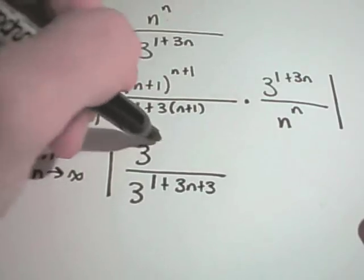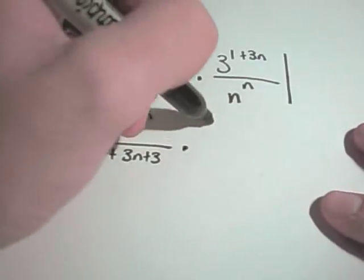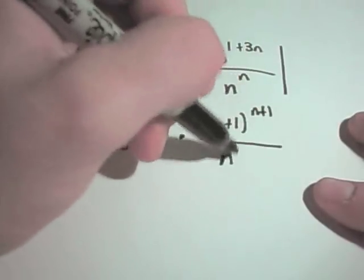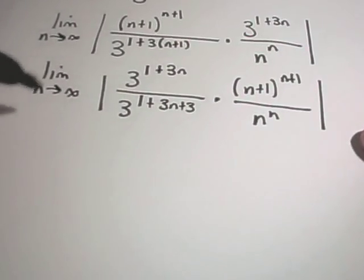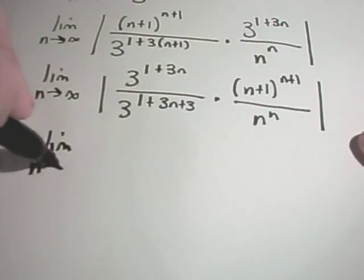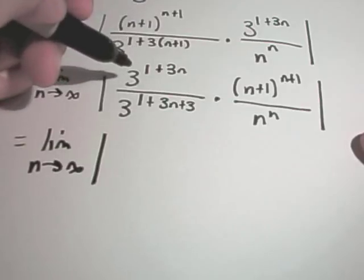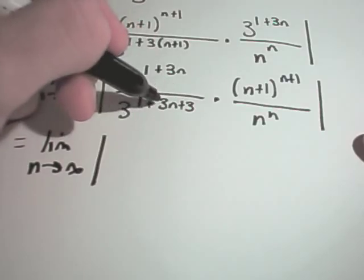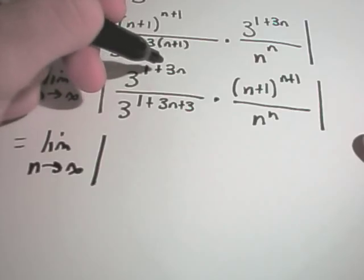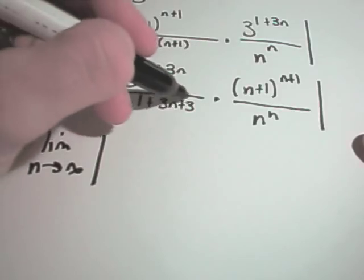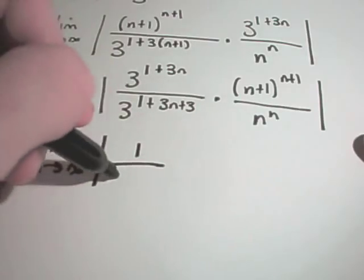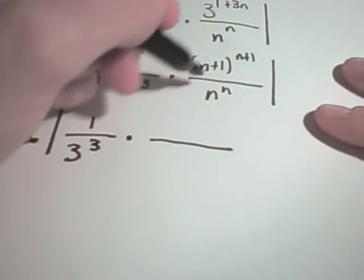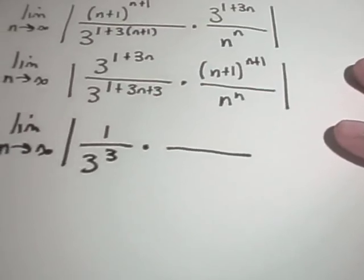And I just move things around. I have 3 raised to the 1 plus 3 to the n on top. Then I have this n plus 1 raised to the n plus 1 power, and that's all being divided by n raised to the n power. All right, so maybe we can clean that up a little bit as well. So now I have, if you think about this on the bottom, I really have 3 raised to the 4 plus 3 to the n, because 1 plus 3 is 4.